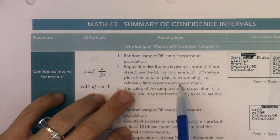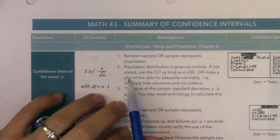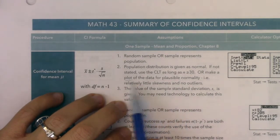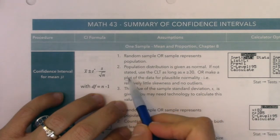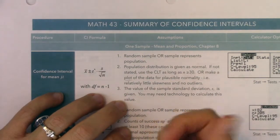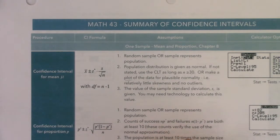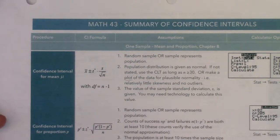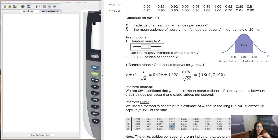The third new way to assess normality when you're in mean land is to make a plot of the data for plausible normality — i.e., relatively little skewness or no outliers. We have a few options: a histogram, a stem-and-leaf plot, or a boxplot. I'm going to make one on my calculator, which can do a histogram and a boxplot. I'll also introduce a third option called the normal probability plot.